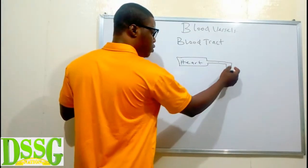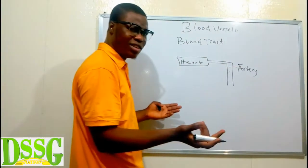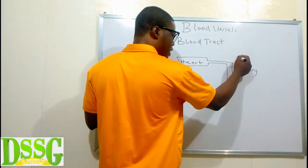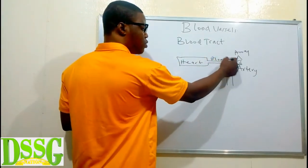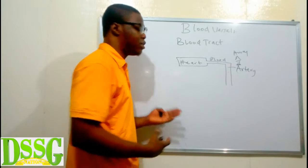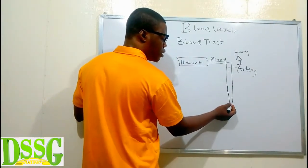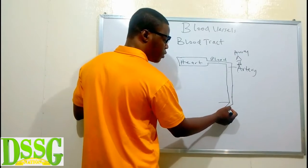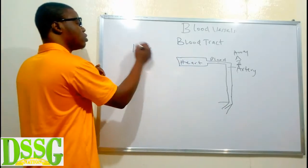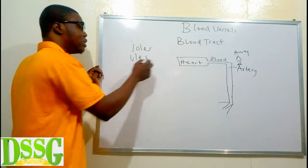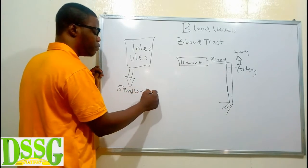These vessels that carry blood away from the heart are called arteries. Notice it starts with 'A' — that A stands for 'away'. So arteries carry blood away from the heart. Then the artery is going to branch into what we call arterioles. When you see the suffix '-oles' or '-ules' in anatomy, it means smaller branches of the preceding word.